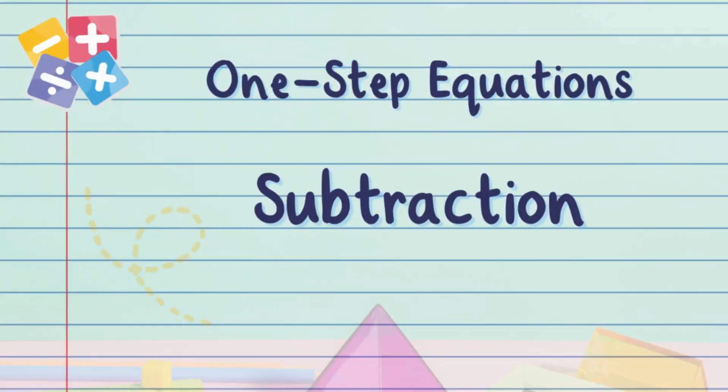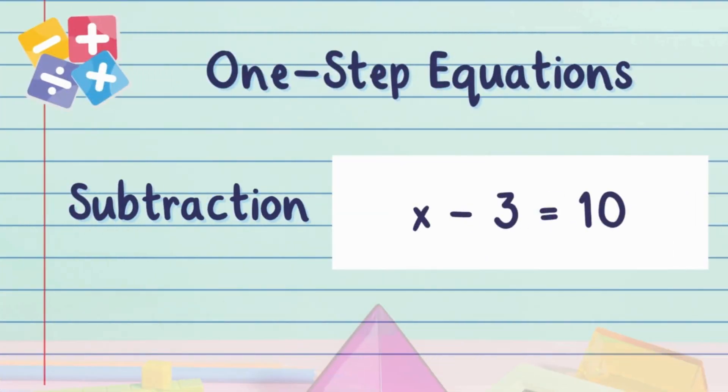Let's try another one, but this time we're dealing with subtraction. Here's our new equation: x - 3 = 10.